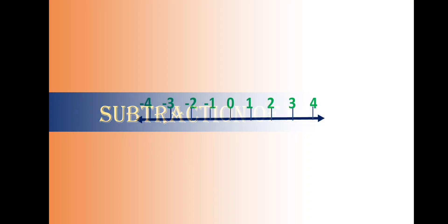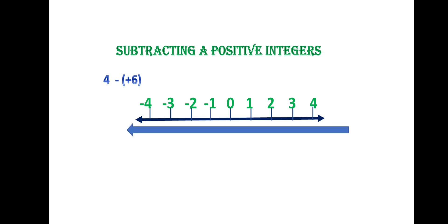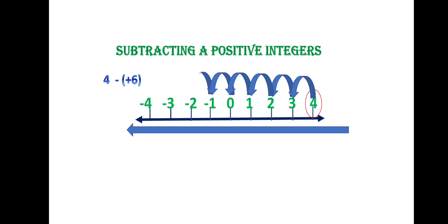Now, how to subtract integers. Subtracting a positive integer works just like subtraction on the number line with natural numbers. Suppose we subtract positive six from four — we move left six places from four. We reach negative two, so the result is negative two.